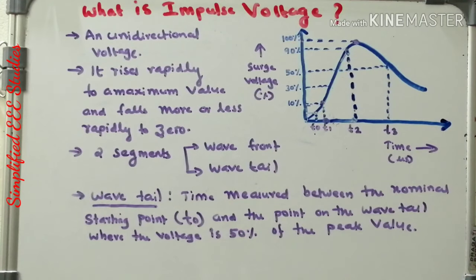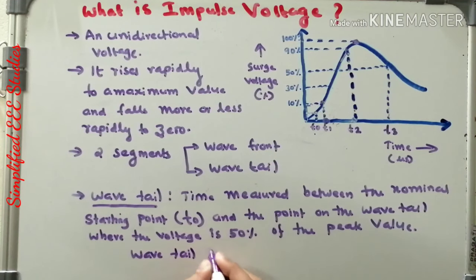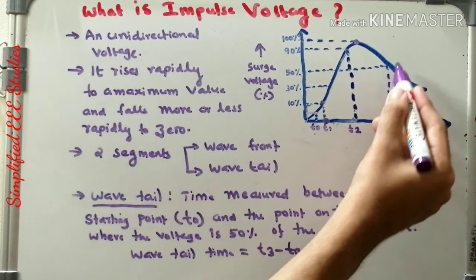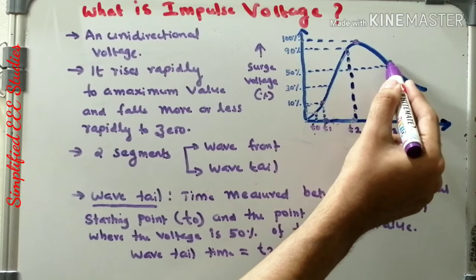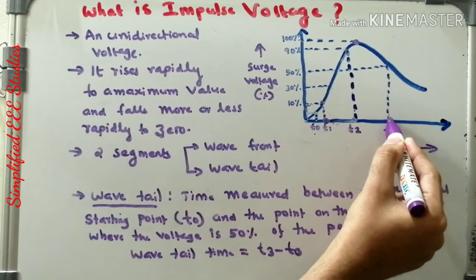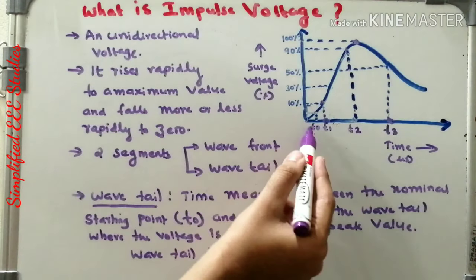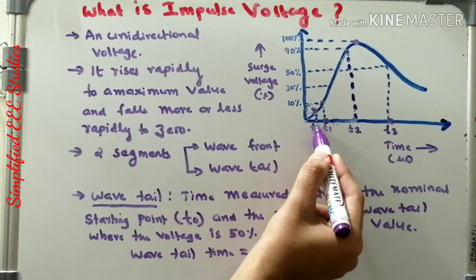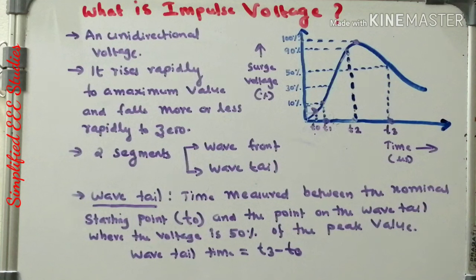That point is T3. Wavetail time can be easily calculated by using the formula T3 minus T0. T3 is the 50% of the peak value, and T0 is the nominal starting point. It is calculated indirectly using this equation. So this is about wavefront and wavetail.